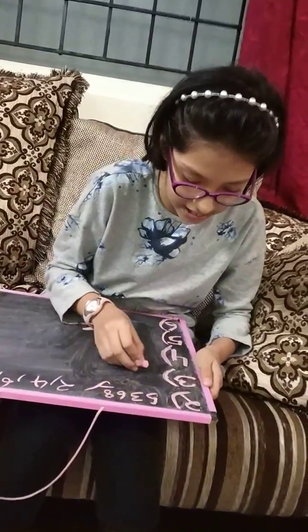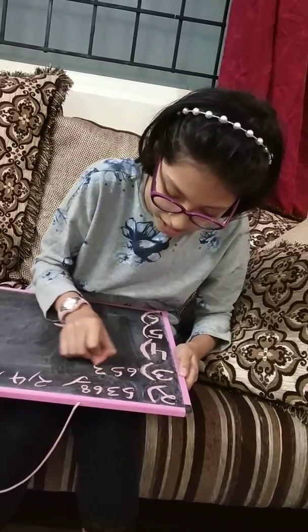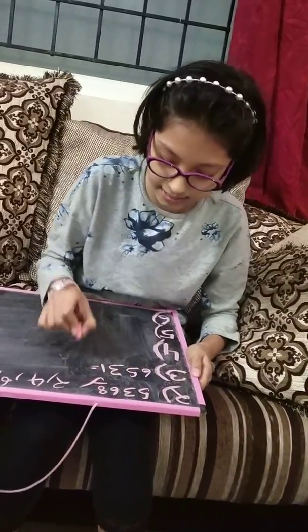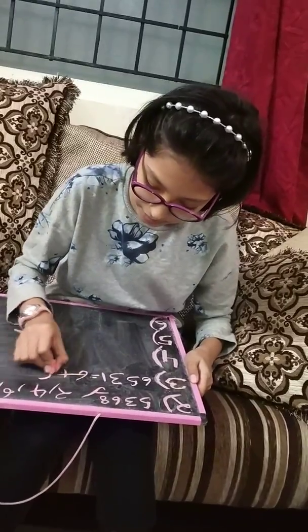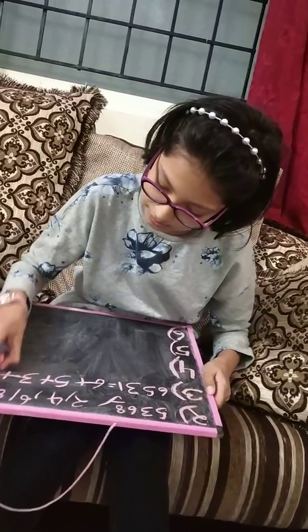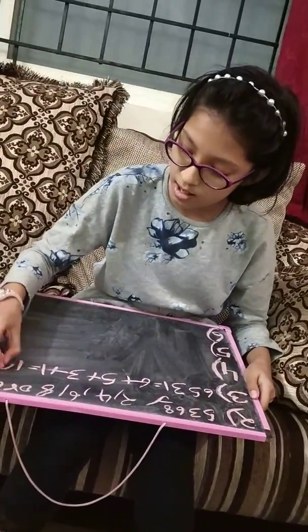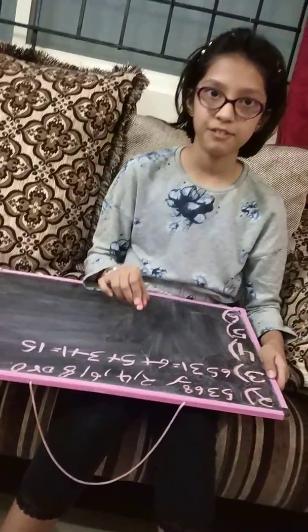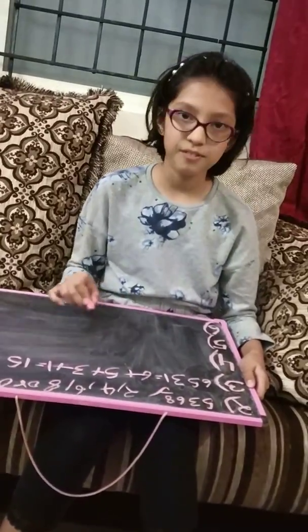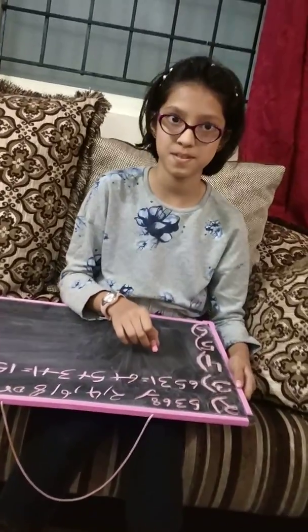Now we will do divisibility by 3. We will take a number, for example 6, 5, 3, 1. In this you need to add all these numbers: 6 plus 5 plus 3 plus 1 is equal to 15. Now 15 is divisible by 3, so this whole number will be divisible by 3.